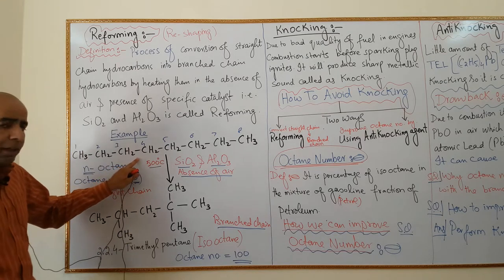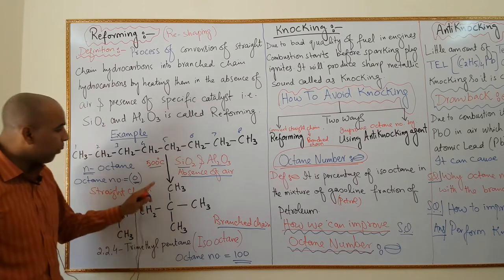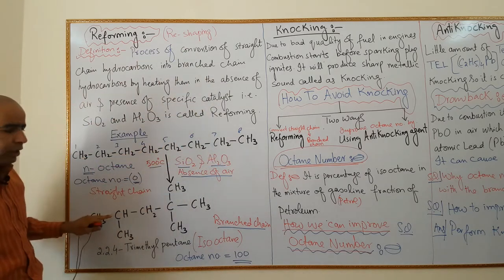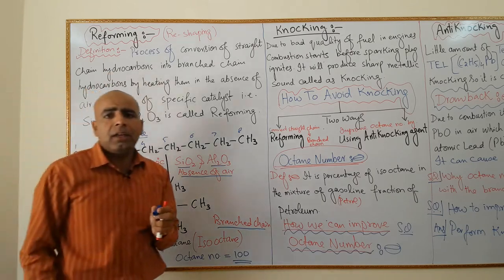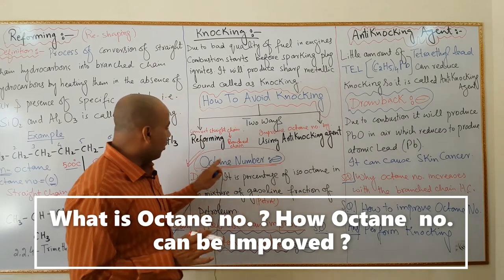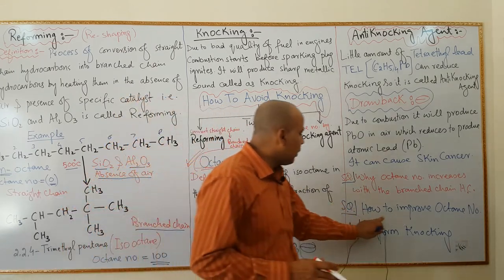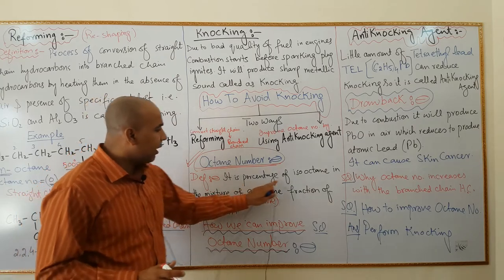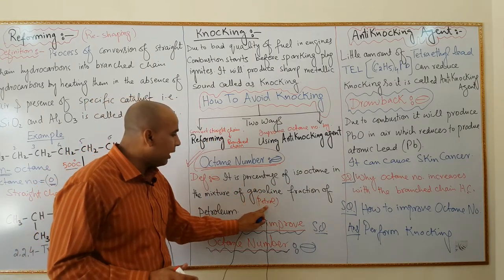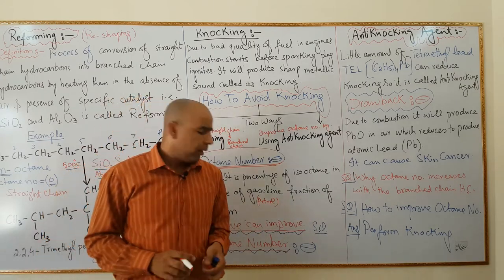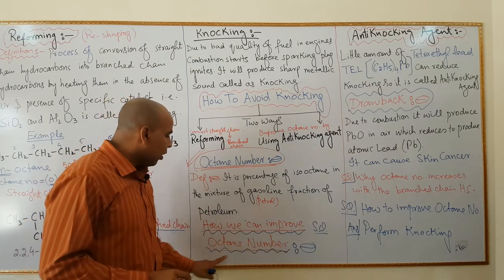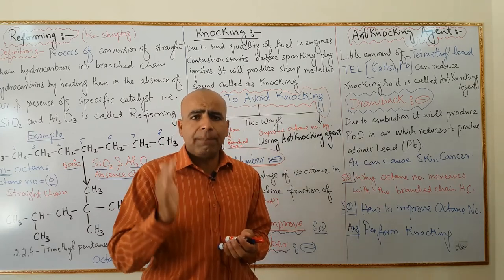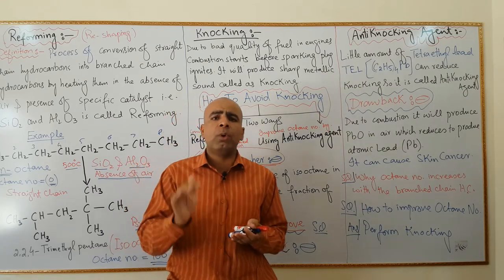This process in which we convert straight chain into branched chain is called reforming — we have done reshaping. Our next topic is octane number. Octane number is the percentage of iso-octane in the mixture of gasoline or petrol fraction of petroleum. Now, how can we improve the octane number?